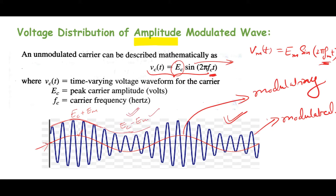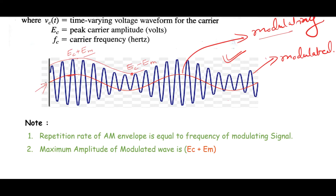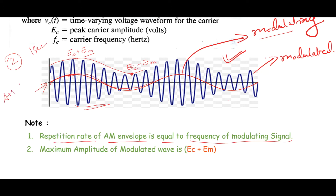We already know that so far we were discussing that the amplitude of the modulating signal has an effect on the carrier or the modulated wave. But we must know that the frequency of the modulating signal is equally important, having equal impact on the carrier wave. The repetition rate of the AM envelope is equal to the frequency of the modulating signal. If the modulating signal repeats twice in one second, then the repetition of the AM wave will also be twice in the same period of time.